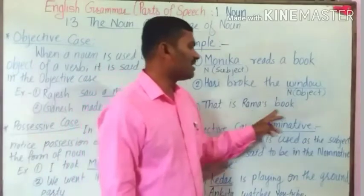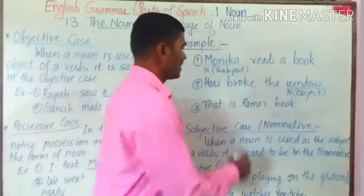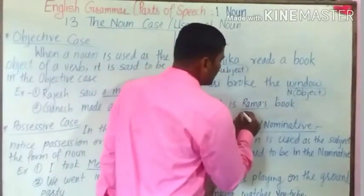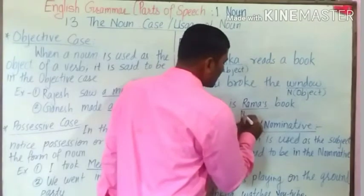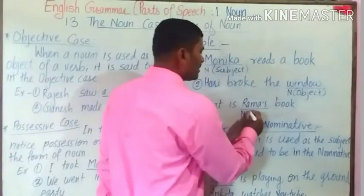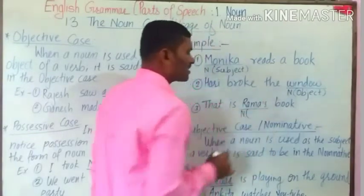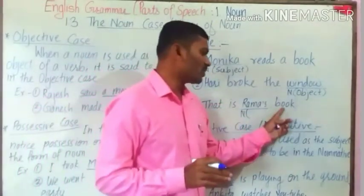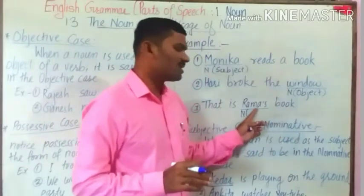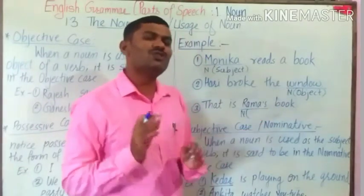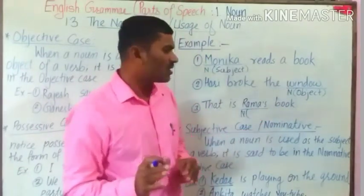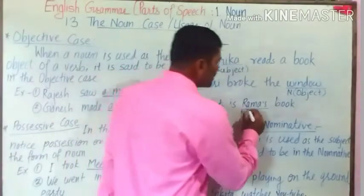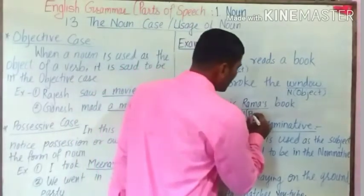The third example: That is Rama's book. Here, Rama is a noun. But this noun is functioning to show the possession of the book. So, Rama is a noun, but it is showing the possession of the book. Therefore, it is in possessive case.